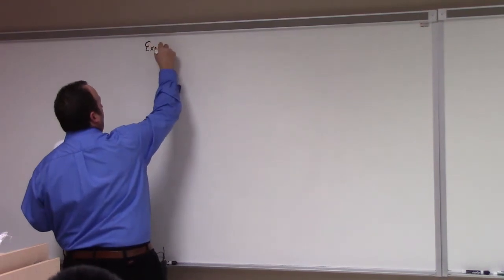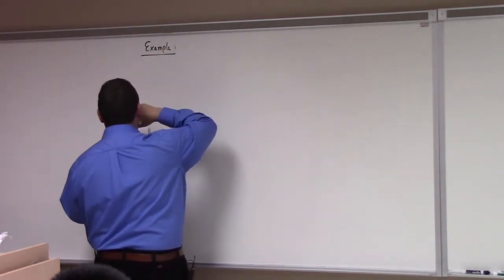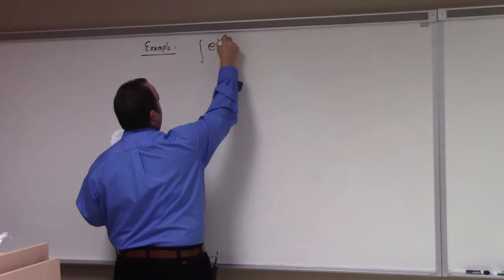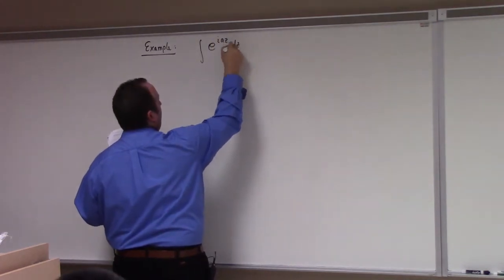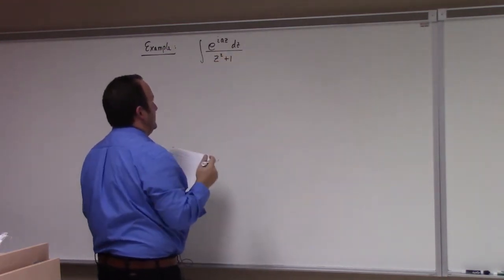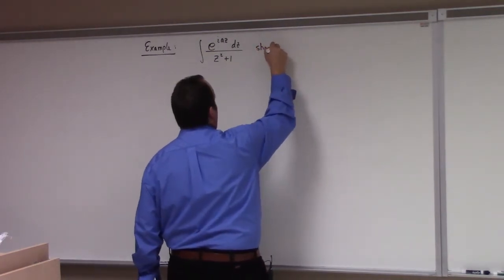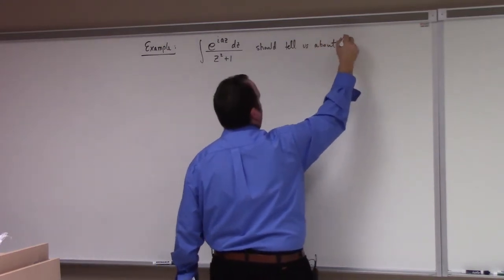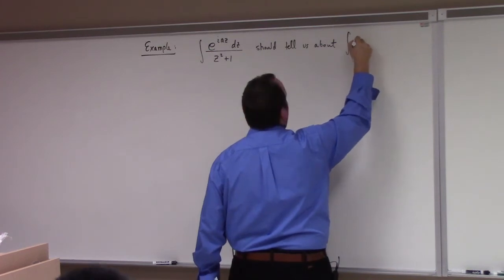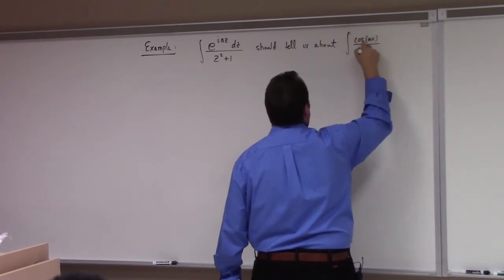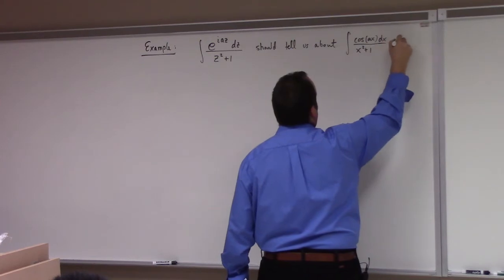Alright, an example. So here I'm going to look at the integral of e to the iaz, dz over z squared plus 1. And the reason I'm going to look at this integral is this should give insight into things like the integral of cosine of ax over x squared plus 1, and things like that.